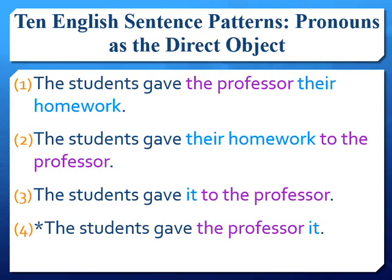When the direct object is a pronoun, the direct object must precede the indirect object, and the indirect object must follow a preposition when it comes after the direct object. For example, the direct object 'their homework' can be replaced by the pronoun 'it.' Once we use the pronoun 'it,' it must follow directly after the verb 'gave.' If we were to try shifting the direct object after the indirect object 'the professor,' the sentence will become ungrammatical, because direct objects in the form of a pronoun must follow the verb and precede the indirect object.